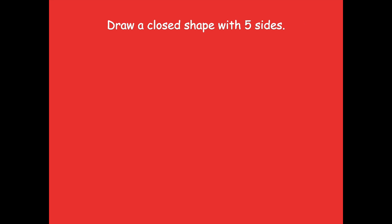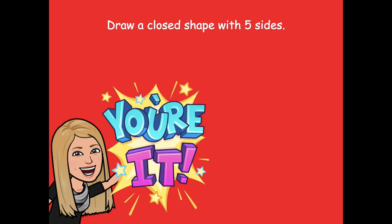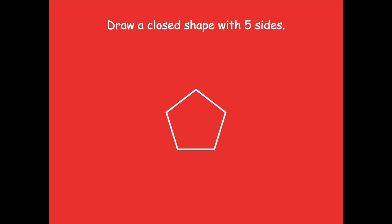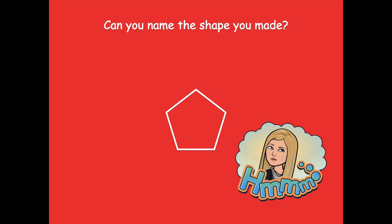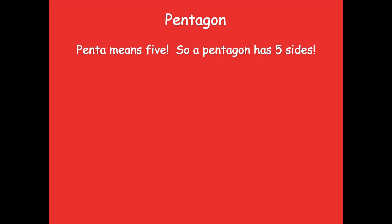I want you to draw a closed shape with five sides. Pause the video, draw any closed shape with five sides, then click play. Here's the shape I came up with — I'm sure many of you have seen this shape before. We can describe it by its attributes: it has five sides and five angles. It's a pentagon. Penta means five, so a pentagon has five sides. All of these shapes have five sides.